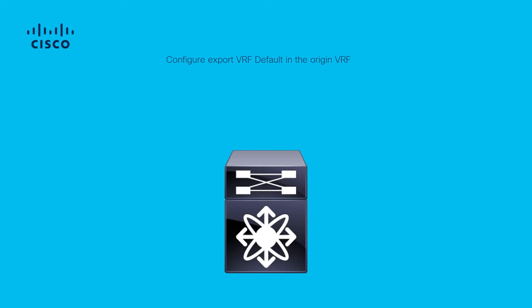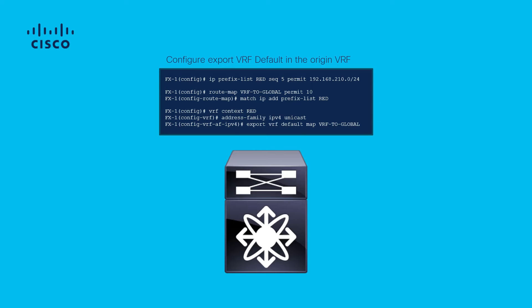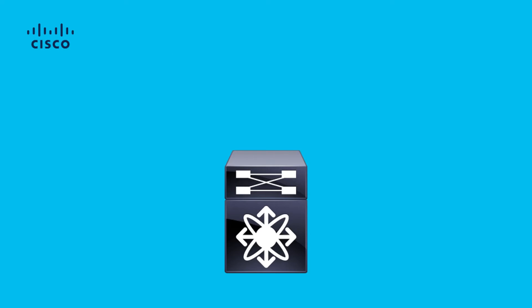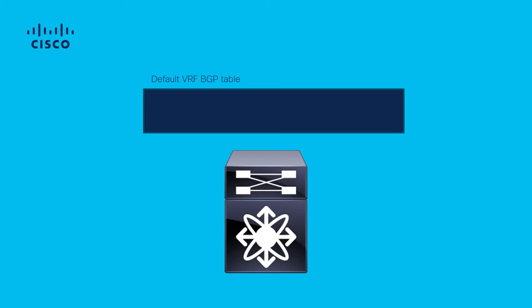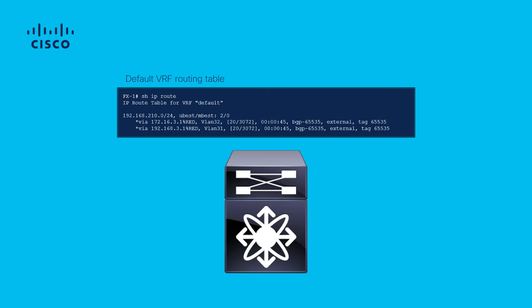The export VRF default command is configured in the origin VRF. The command requires a route-map as a parameter in order to explicitly define the routes to be exported into the default VRF. Confirm in the default VRF that the routes are now seen via BGP. These BGP routes in the default VRF can now be redistributed into any other routing protocol that also runs in the default VRF.